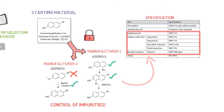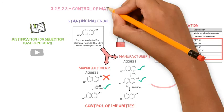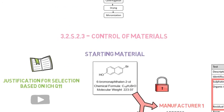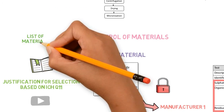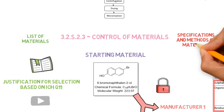This information about the starting material is part of the section Control of Materials. In the Applicant Part, we should also see a list of all materials, while the Restricted Part will include the specification and methods for all these materials which are introduced in the process.